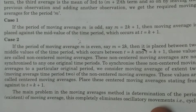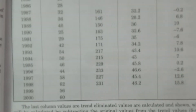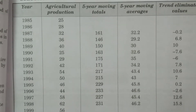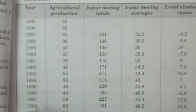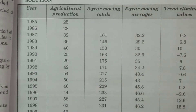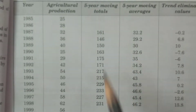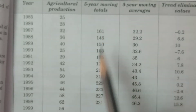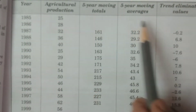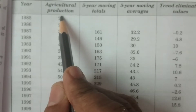This method is useful in time series for obtaining long-term fluctuations. Now I will explain one particular problem showing how to calculate moving averages. The data given is for 1985 to 2000 — some agriculture production data. We are calculating five-year moving averages. For five-year moving averages, you need to calculate five-year moving totals, five-year moving averages, and the trend-eliminated values.